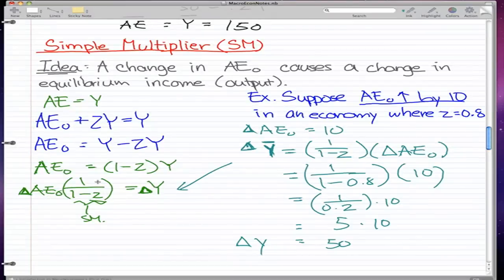Change in Y equals change in autonomous expenditure times the simple multiplier equals our change in Y, because we see that a change in AE would cause a change in the equilibrium output. And that is what I want you to know for this video.